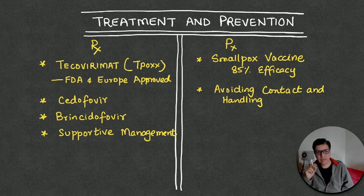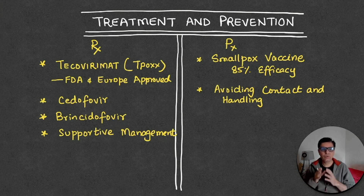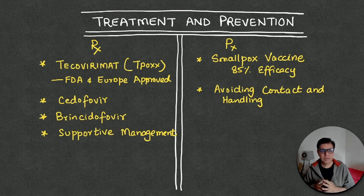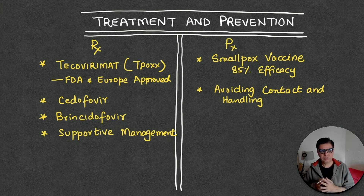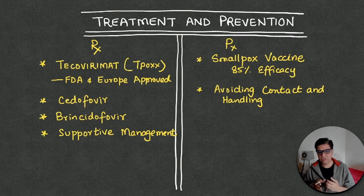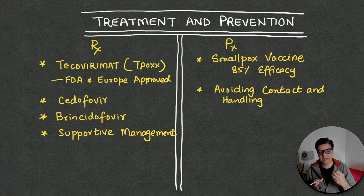For treatment, one FDA- and Europe-approved drug for severe monkeypox is tecovirimat (trade name TPOXX), which is also used for cowpox. Two experimental antiviral drugs — cidofovir and brincidofovir — can also be used. However, by and large most treatment remains supportive: antipyretics, good hydration, antihistamines for itchy rash, and preventing secondary bacterial infection of lesions. If secondary infection occurs, systemic antibiotics are indicated.